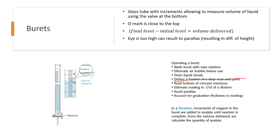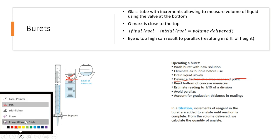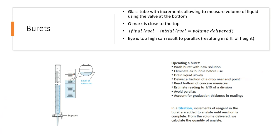When reading the bottom of the concave meniscus, this is important. When reading this, you always read right here at this level. You don't ever read this part. Always read the one here. And estimate the reading to one-tenth of a division. Avoid parallax, which I already talked about. Account for graduation thickness and readings.